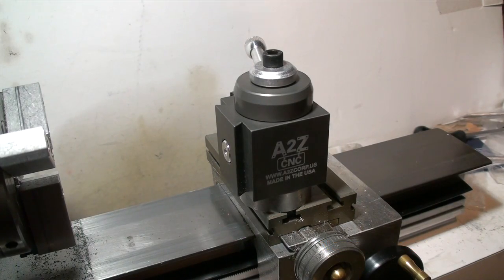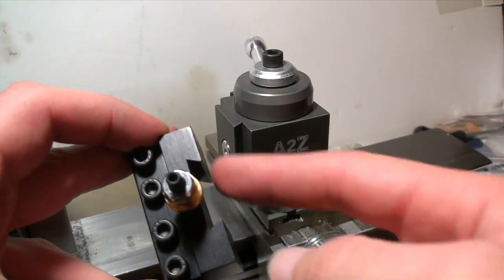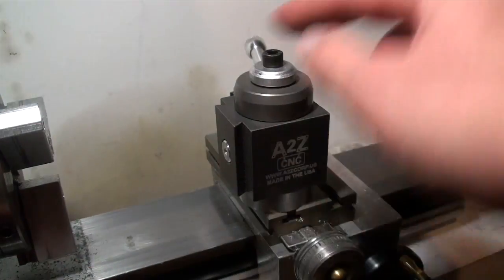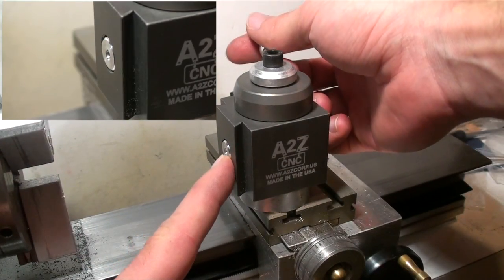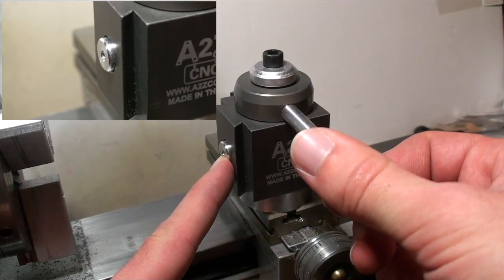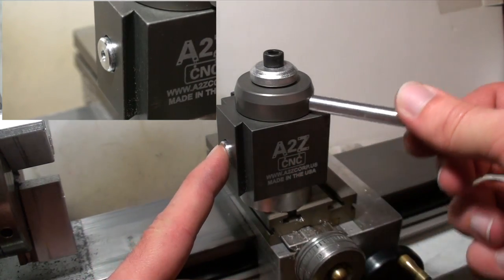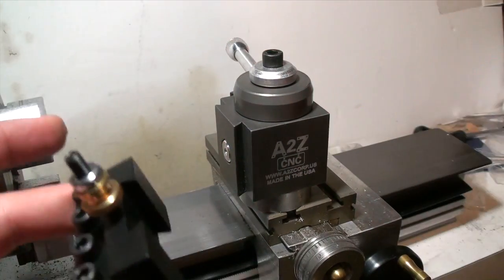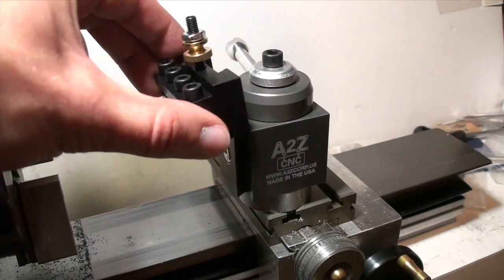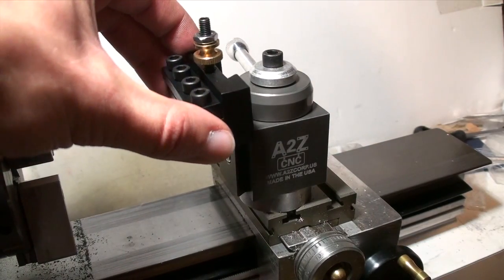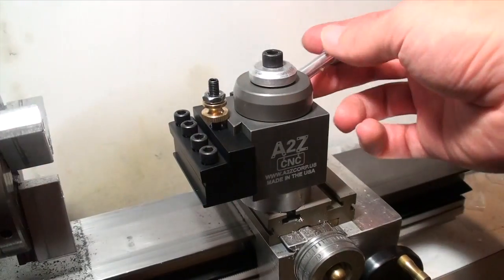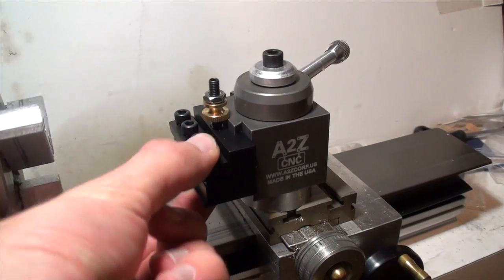Your tool post has two dovetails and what secures it is pressure from this dowel that gets pushed out. So when you put your tool post on, lock it in, it's going nowhere.